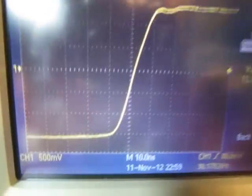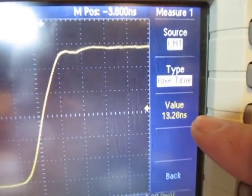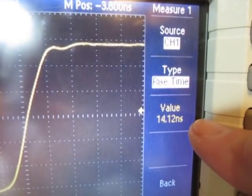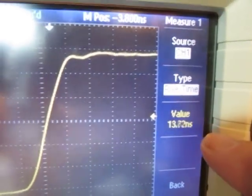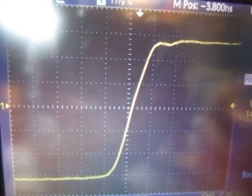So now here at 10 nanoseconds per division, I don't have that question mark at the value anymore. And we see it's bouncing around between the high 13s, low 14 nanosecond type numbers. Pretty easy to get that measurement right on the scope here. We didn't have to do anything special. It's just built in.